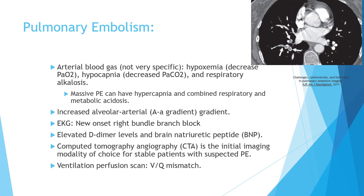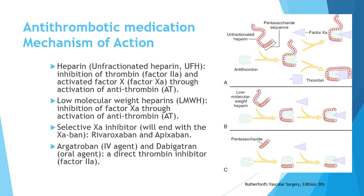Ventilation-perfusion (V/Q) scan is a scintigraphy/nuclear imaging study that is less commonly used now. It will show a V/Q mismatch, meaning not all areas with ventilation will have corresponding perfusion due to the embolism. The V/Q scan used to be done more frequently, but now CT angiography — or even standard CT — is increasingly preferred in stable patients.